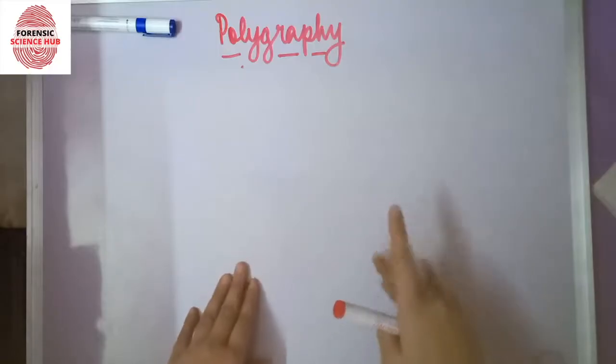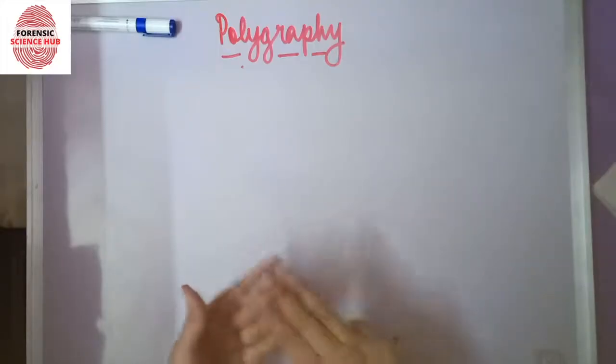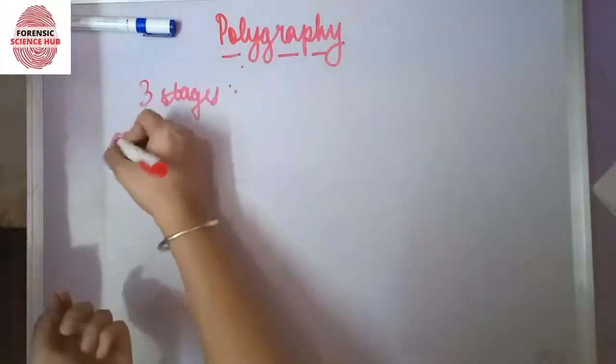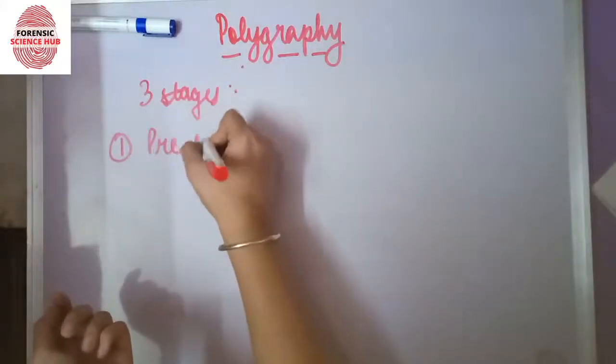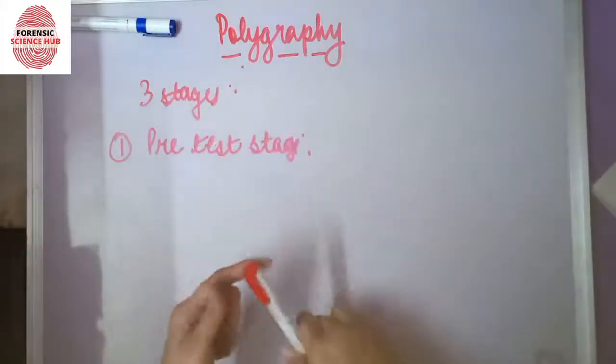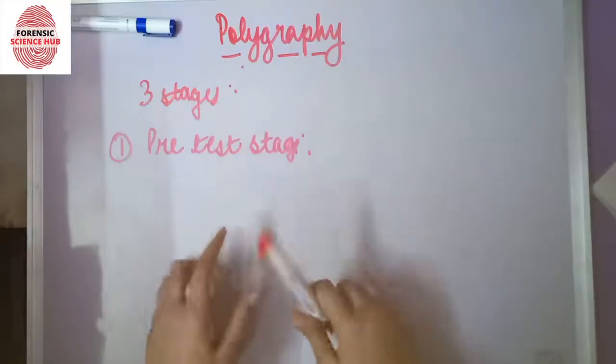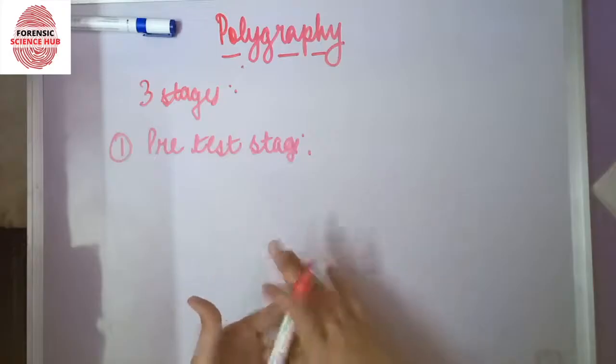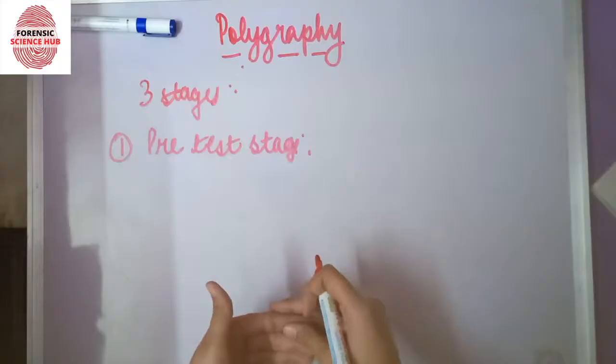The polygraph test consists of three main stages. The first stage is the pre-test stage. In this stage, the person who will undergo the test is informed about the procedure.